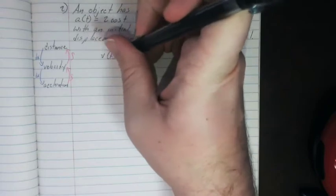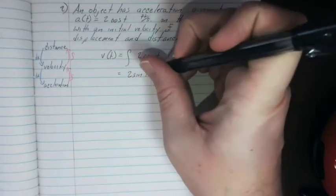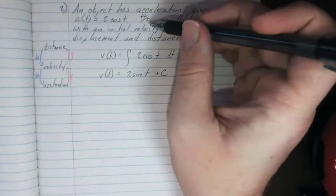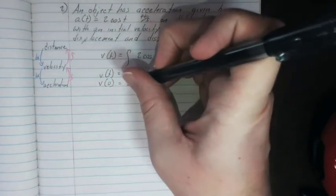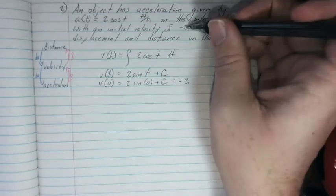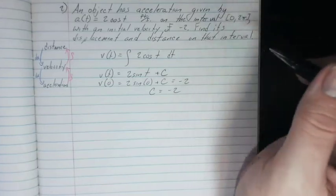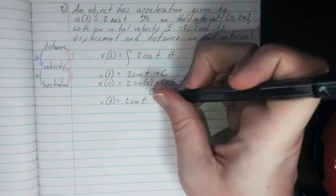So, the velocity is going to be equal to the integral of 2 cosine dt. Well, that's just equal to 2 sine of t plus c. Now, they tell us that the initial velocity at time 0, that's our v. So we just plug it in. Time is 0 equals 2 sine of 0 plus c. And we know this has to equal negative 2, because that's that velocity. Well, that just means that c is equal to negative 2, sine of 0 is 0. We have our velocity formula. Velocity is just 2 sine of t minus 2.